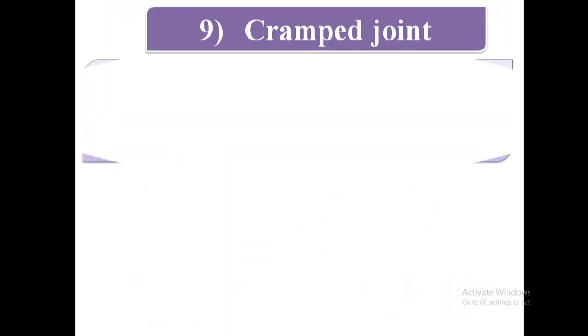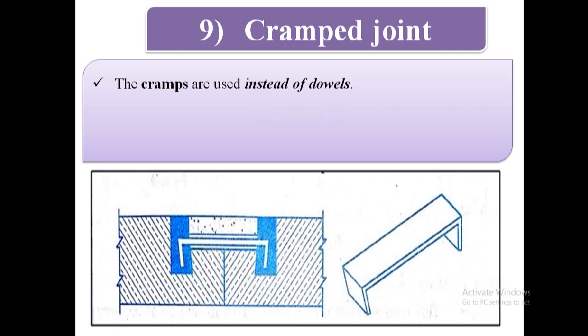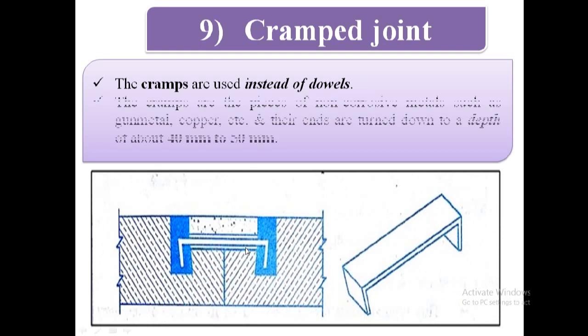Next type is cramped joint. In this type of joint, the cramps are used instead of dowels. Here we can see cramps are used instead of dowels.